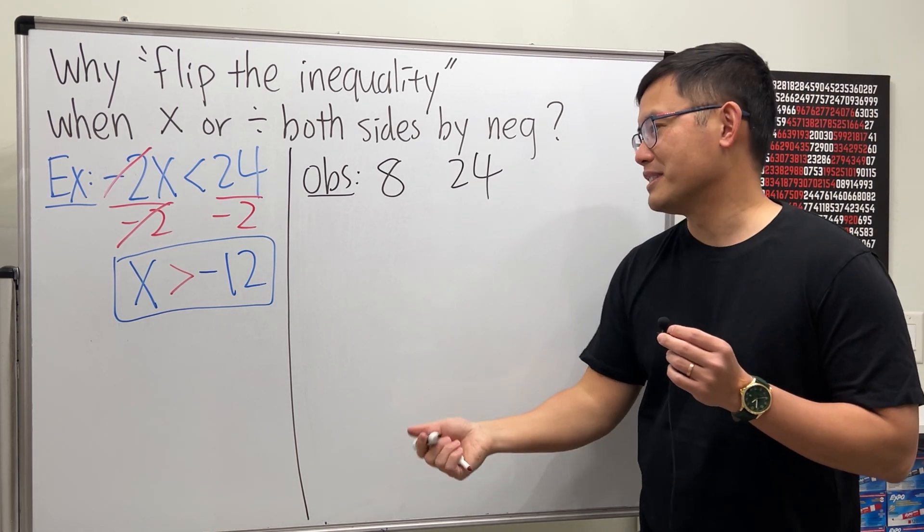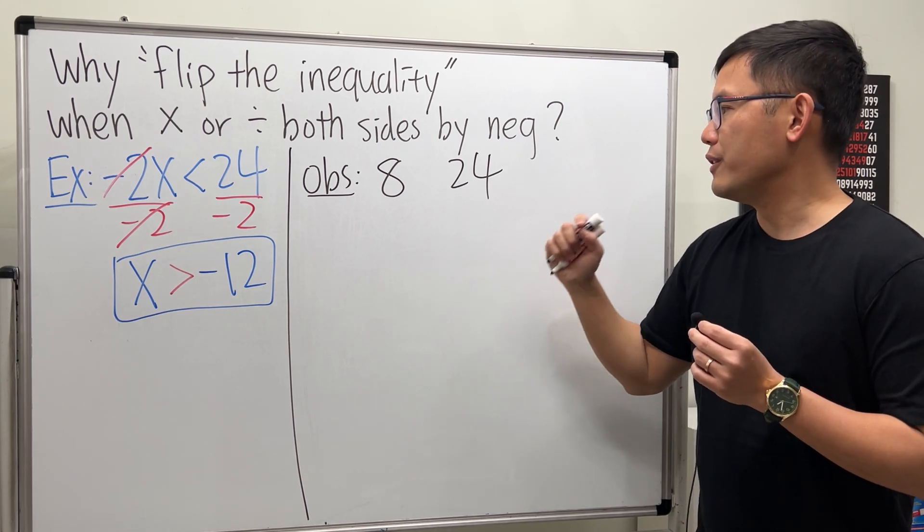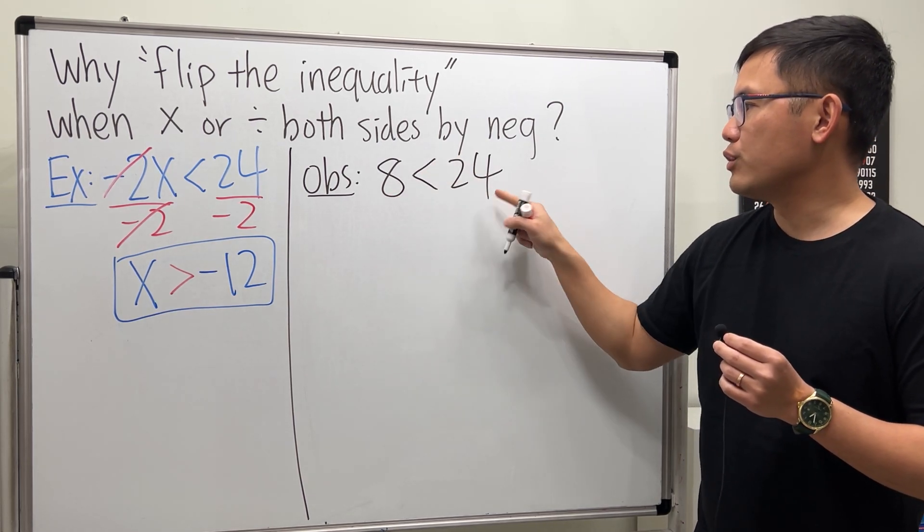Rest in peace, Kobe Bryant. 8 and 24, which one's bigger? 24. So we can say 8 is less than 24.